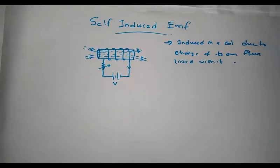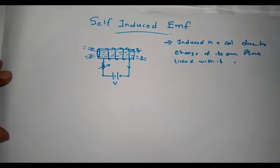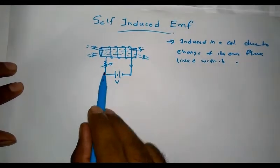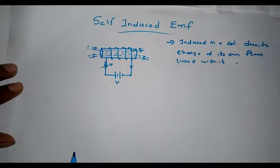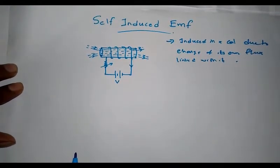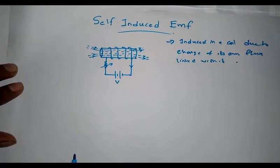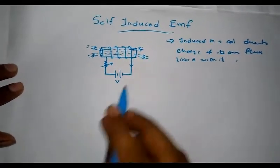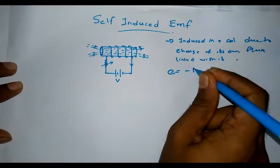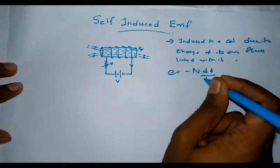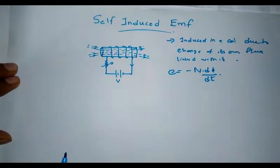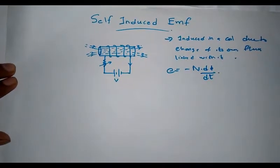In such a condition, if the current in the conductor changes, the flux linking with the coil also changes. When this current is changed by varying the rheostat, the flux linking with the coil also changes. Hence an EMF is induced in the coil according to Faraday's law, given by E = −N × dΦ/dt, where the negative sign represents Lenz's law.